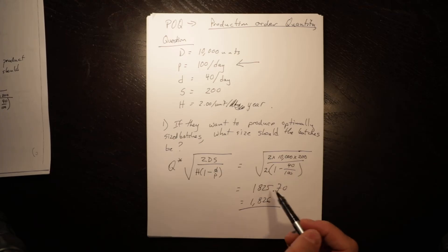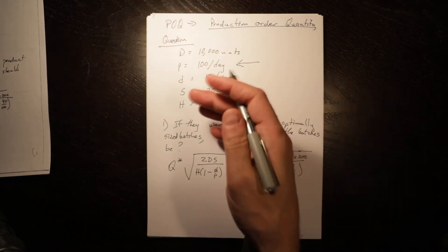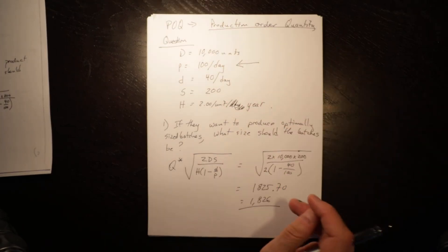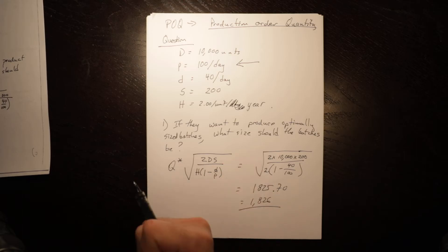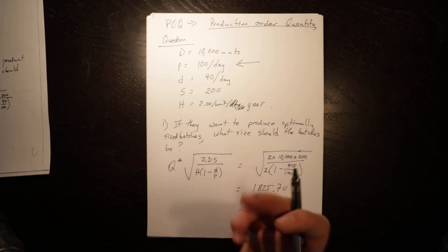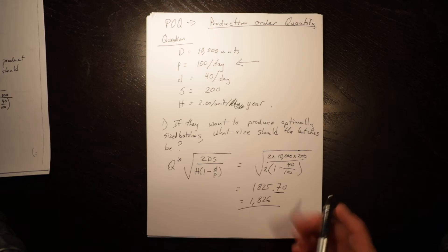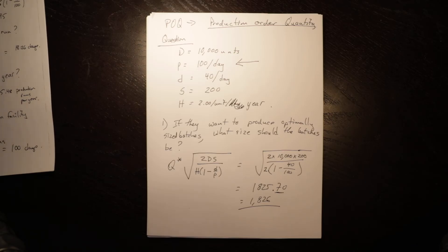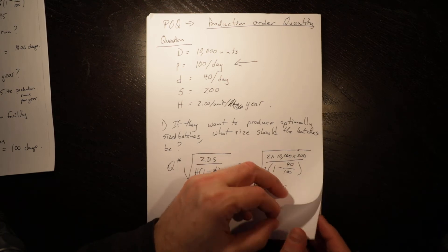In inventory you can round it up. The rule generally is it depends what the items are. In this case we had 10,000 units. If it was widgets, we couldn't produce 0.7 of the widgets. If it was kilograms or liters, then we could leave it like that, but generally I would round up. So 1826 is the optimal production run in this case, which means that is the amount that we would order to be produced.